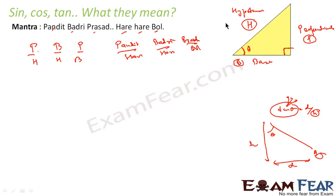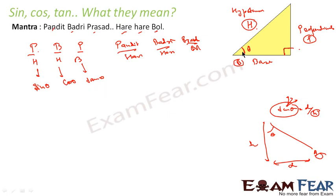So when you say P by H, this is nothing but sin theta. The side opposite to the right angle is hypotenuse. If you take angle theta, the opposite side is perpendicular and the side adjacent to theta is the base. So sin theta equals P by H, cos theta equals B by H, and tan theta equals P by B.